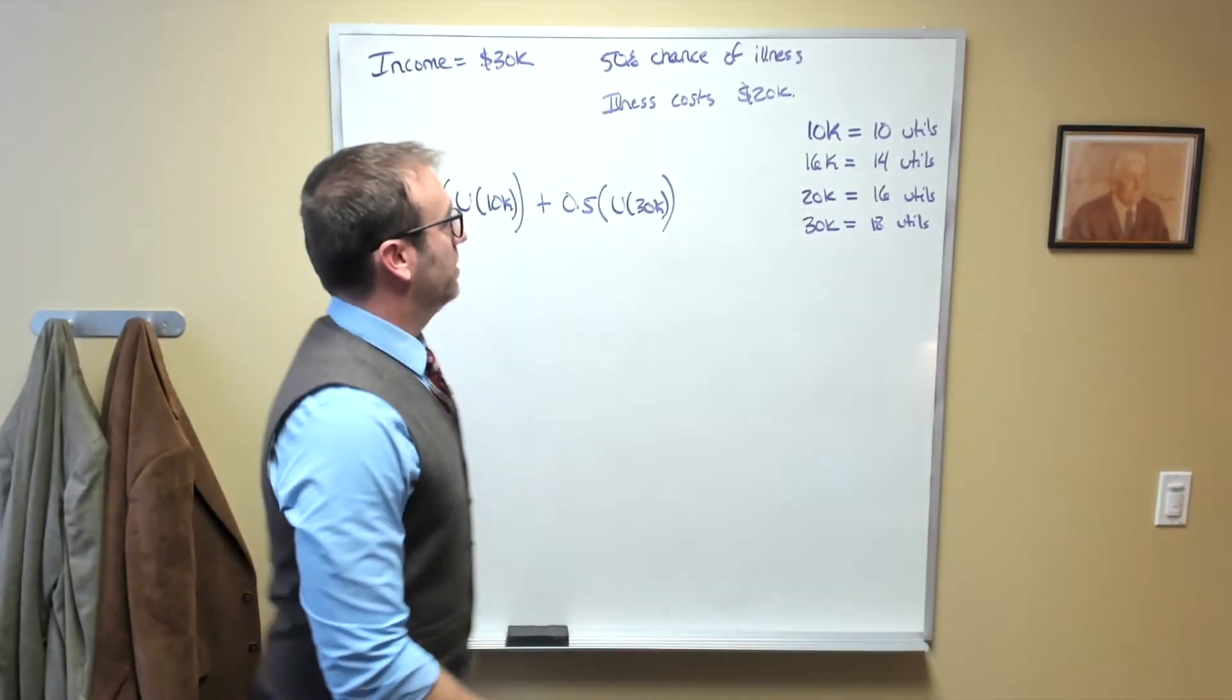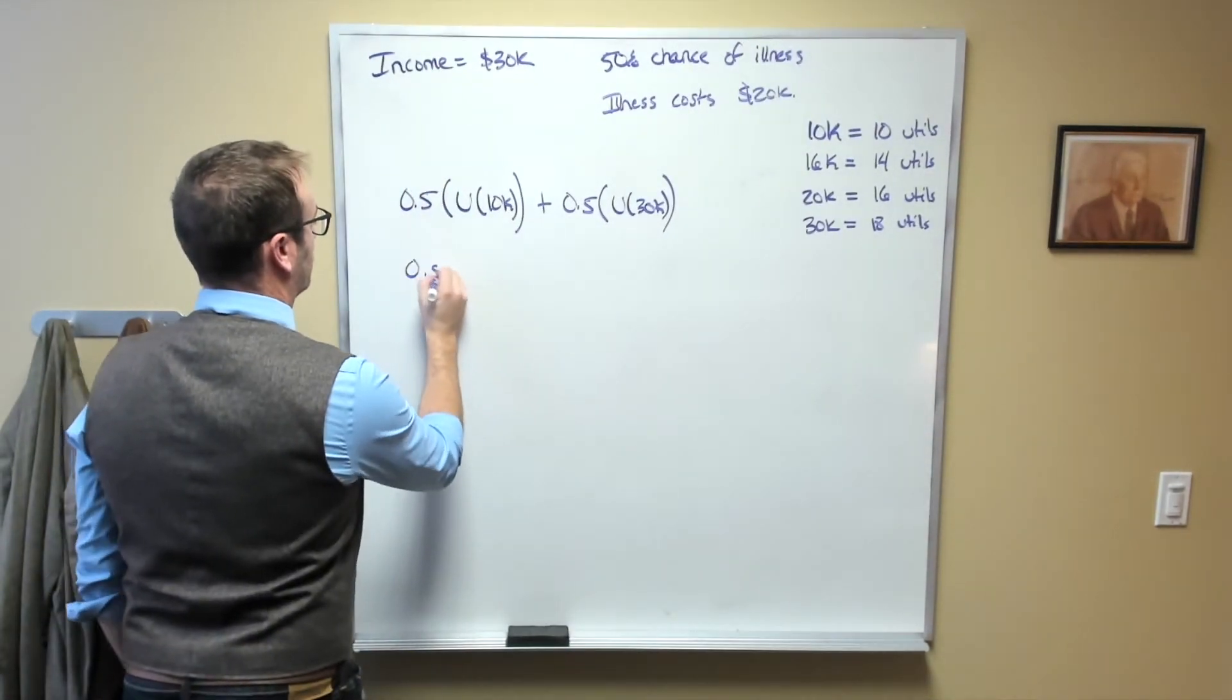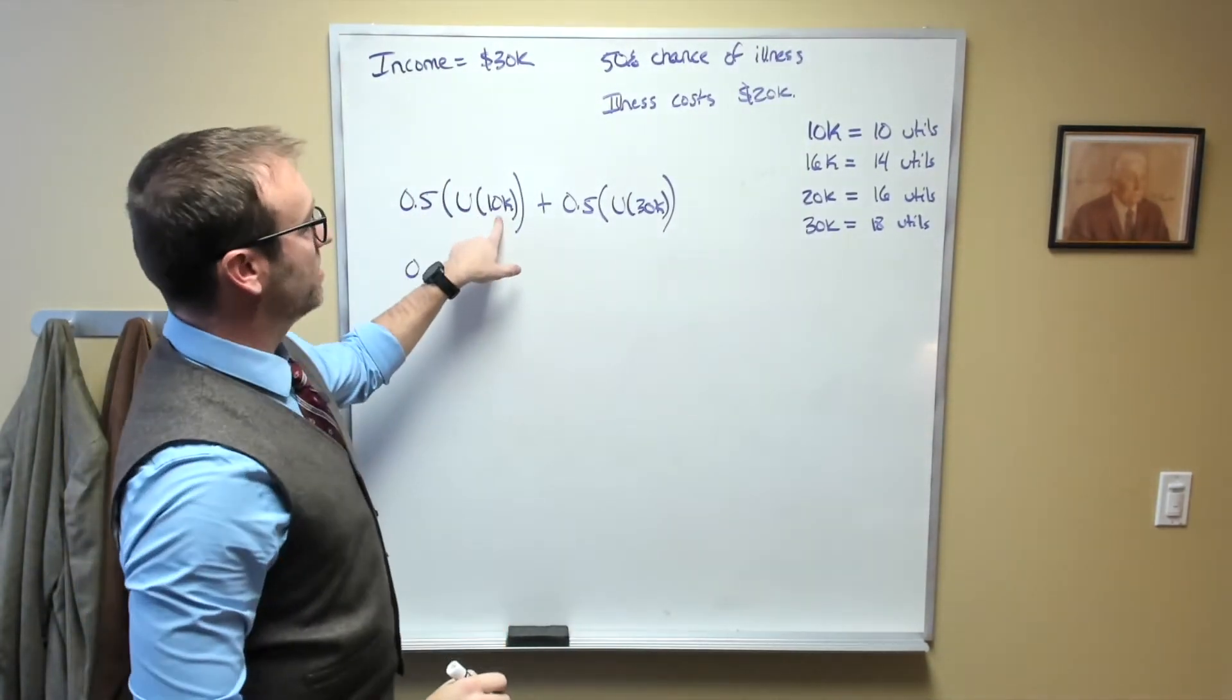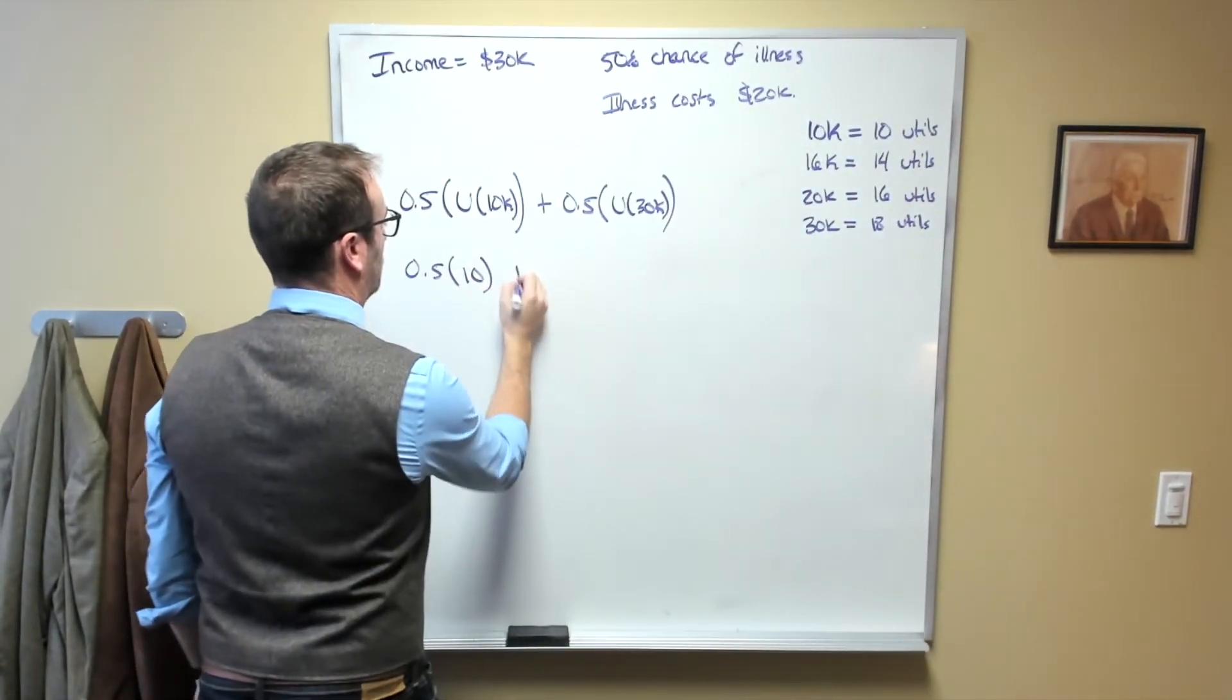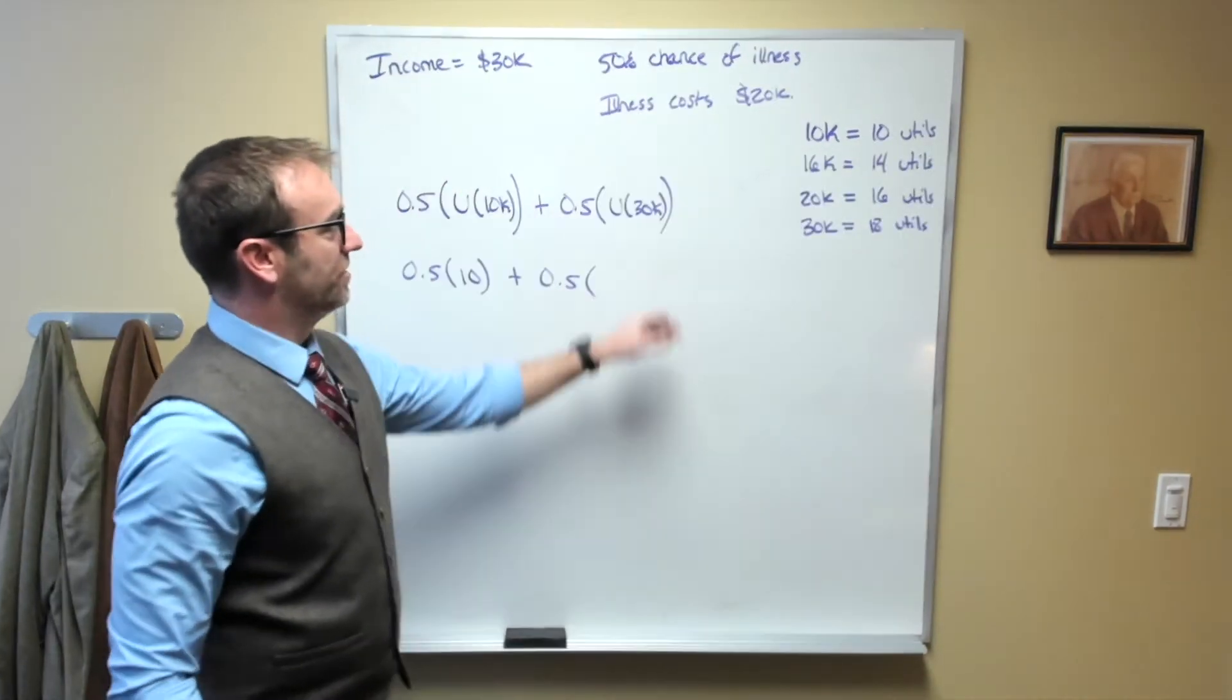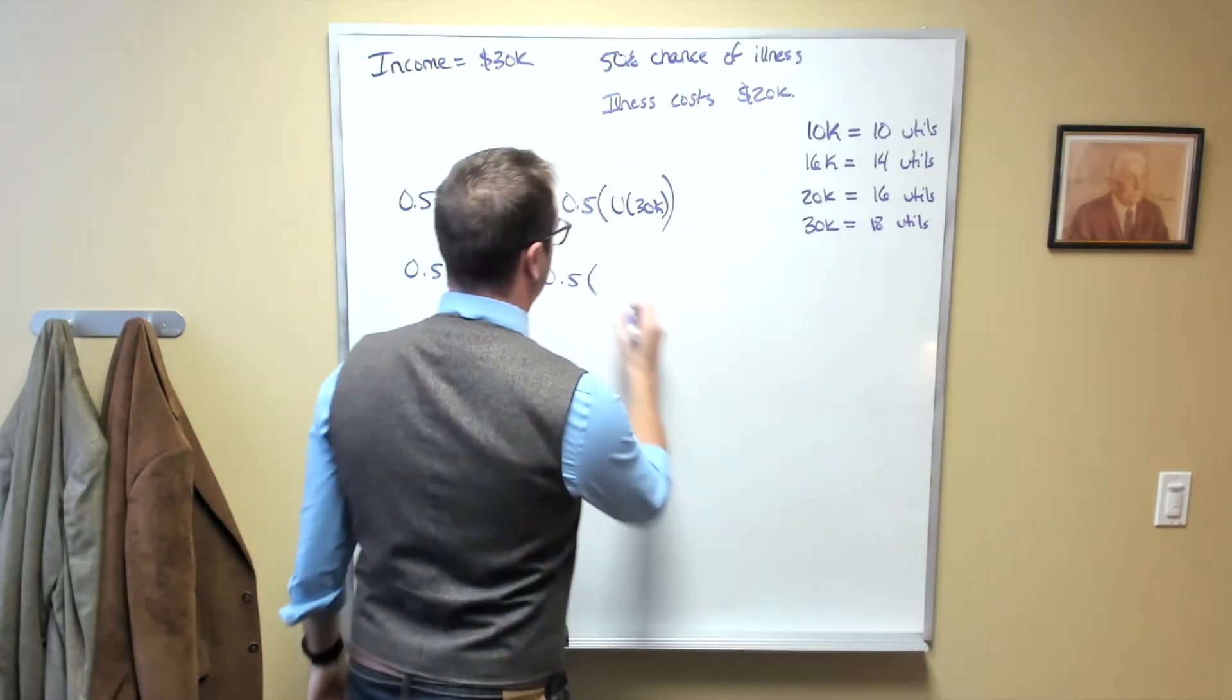Referring back to our chart here, that would be 0.5 times the utility of $10,000, which is 10, plus 0.5 times the utility of $30,000, which is 18 utils.